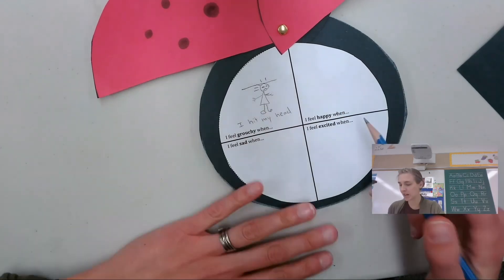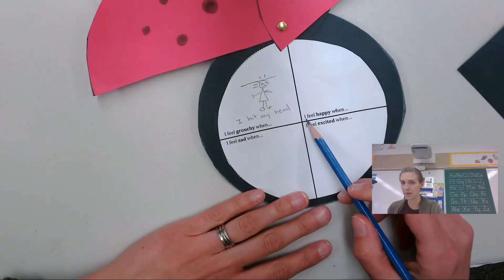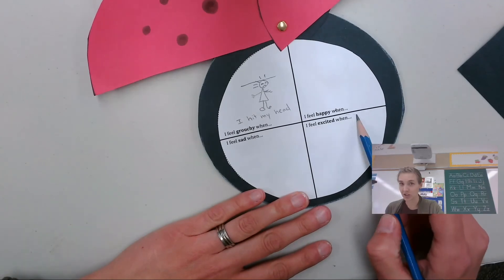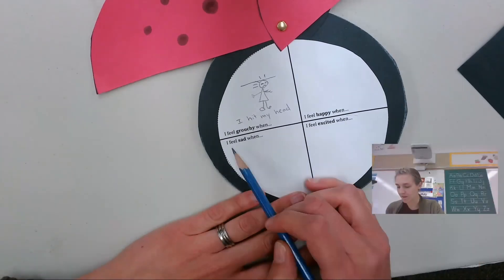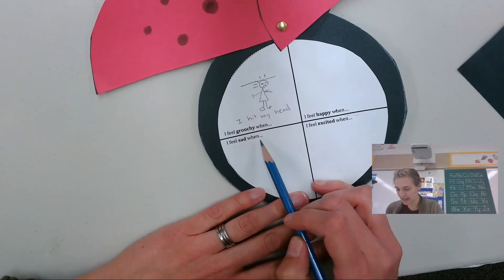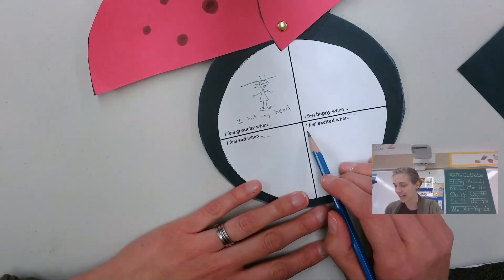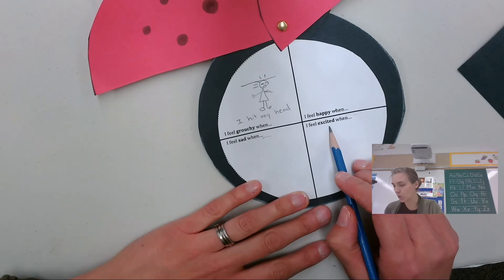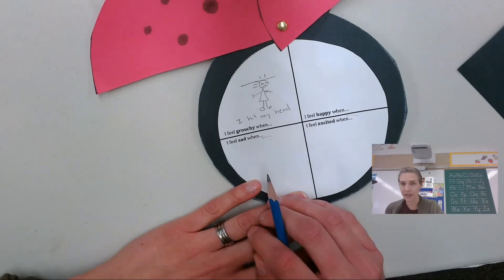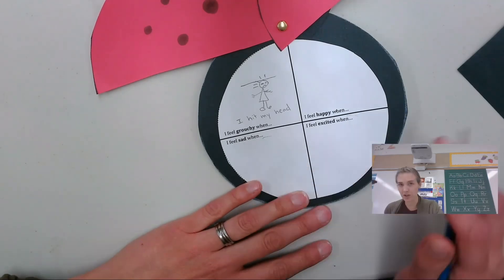Then I would draw a picture. I feel happy when. So then draw that picture. I feel sad when. So what's something that makes you feel sad? I feel excited when. And you're going to draw pictures and then write words to go with your pictures.